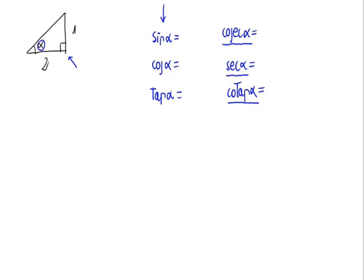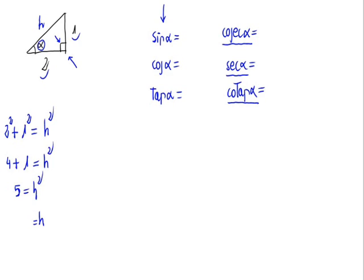As we have a right triangle, first we are going to calculate the missing side of the triangle — the hypotenuse. Since it is a right triangle, we can apply the Pythagorean theorem, which states that the sum of the legs squared is equal to the hypotenuse squared. So: 2 squared is 4, plus 1 squared is 1, equals the hypotenuse squared. 4 plus 1 is 5, so h squared equals 5, and h equals the square root of 5 — taking only the positive value since it is a side length.